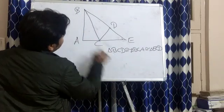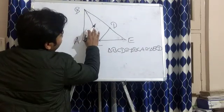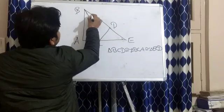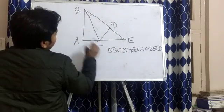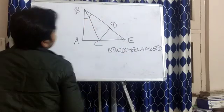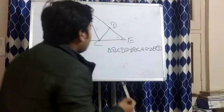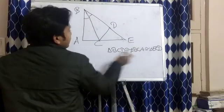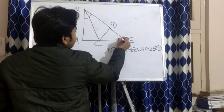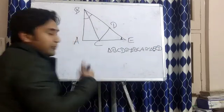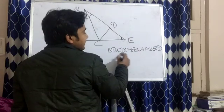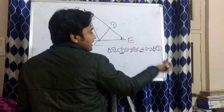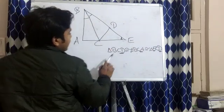In triangle BCD, angle B is equal to angle B in triangle BCA — this angle will be equal to that angle. We have to maintain the order. The first angle in triangle ECD will also be equal to this angle. So this angle equals this angle equals this angle — I am marking these with a single curve.